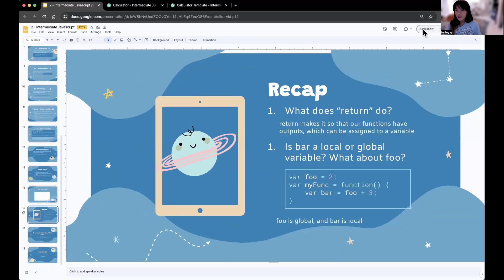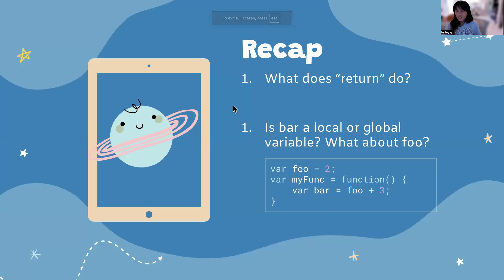Last thing we'll do here today is go over the recap for this lesson, which is intermediate lesson two. The first question, what does return do? Second question, is bar a local or global variable? And what about foo? For this second question, you are going to be referring to this picture down here: var foo equals two, var my func equals function, var bar equals foo plus three. Go ahead and take a moment to think of these questions. And when you are ready, you can unpause this video.